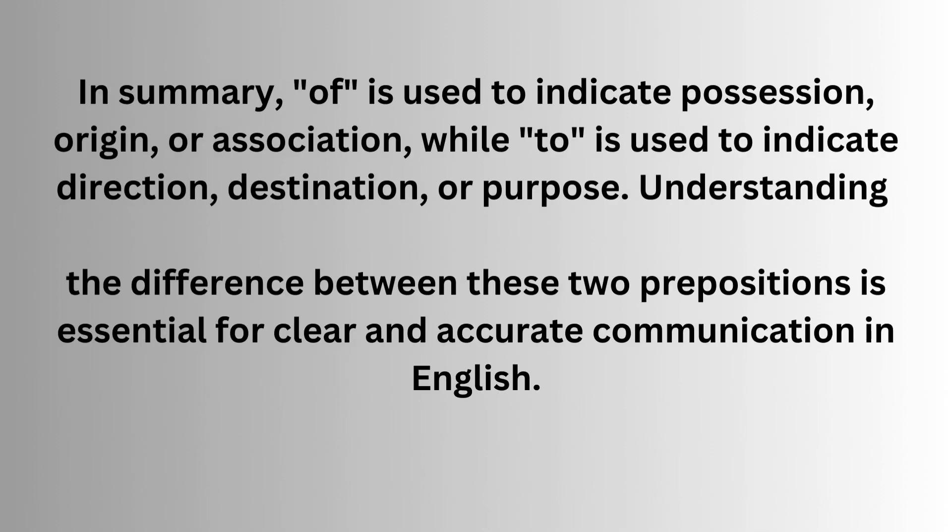In summary, 'of' is used to indicate possession, origin, or association, while 'to' is used to indicate direction, destination, or purpose. Understanding the difference between these two prepositions is essential for clear and accurate communication in English.